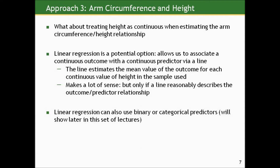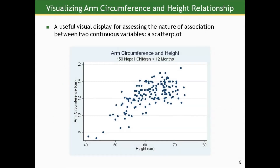The nice thing about linear regression is that we're not limited to continuous predictors — our x's can be binary or categorical as well, allowing for greater flexibility. But for now, we're going to work with continuous predictors since we've never had a way to handle those before. Let's look at the relationship treating both arm circumference and height as continuous. A useful visual display for assessing the association between two continuous variables is a scatter plot.